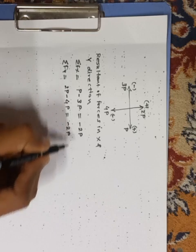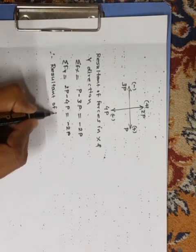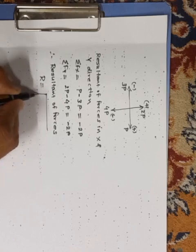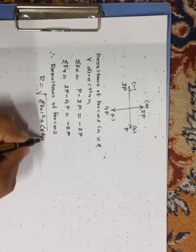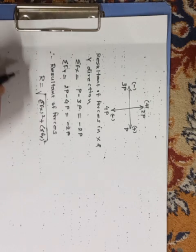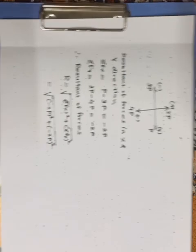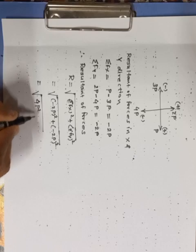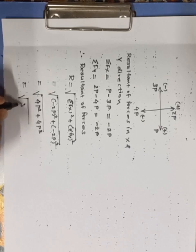And hence, I can get resultant of forces by using formula, R equals to under root of summation of fx square, plus summation of fy square. So, similarly, just put up the values minus 2P square, minus 2P square, and hence, I will get under root of 4P square plus 4P square. So, that is equals to 8P square.